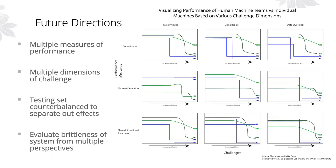Where we want to continue with this method is to incorporate multiple complementary measures of performance, multiple challenge dimensions, and counterbalanced testing sets to separate out the effects. Our goal is an evaluative method that views system performance from multiple perspectives, so we can better understand and direct our attention to the types of challenges to which the system is particularly brittle.